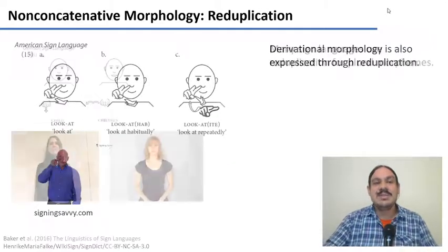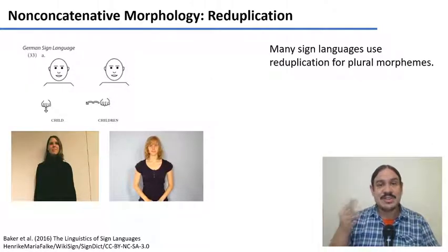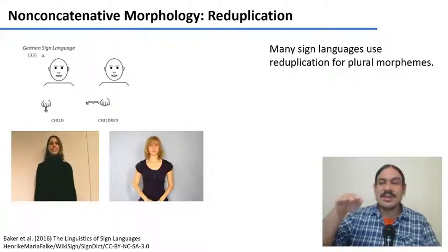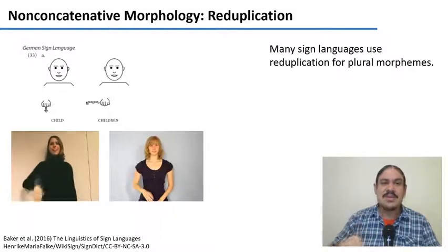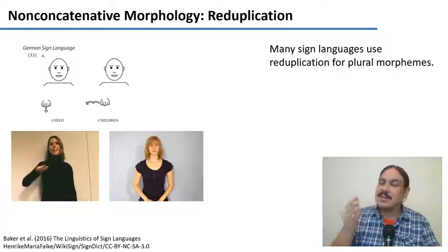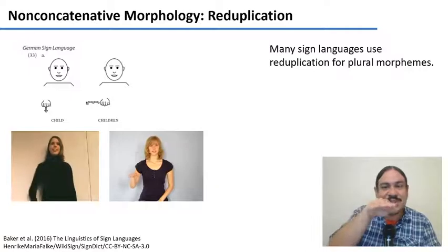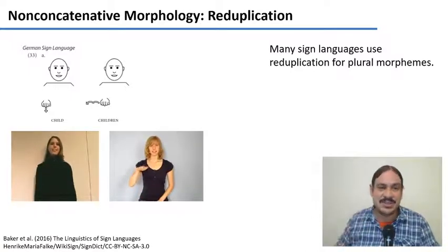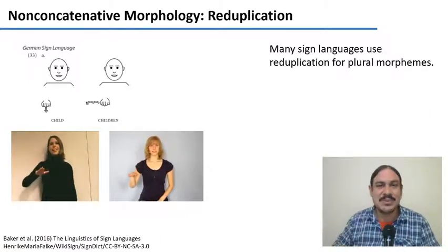Sign languages have ablaut and reduplication. This is an example of partial reduplication. The first word is the German sign language word for 'child': extended hand, downward motion. The word for 'children' has less of a drop in the hand — not as much of a drop, and then a repetition of it. So this is a kind of partial reduplication of the sign 'child', where you duplicate a little bit of it — some of the drop — and then continue onto the motion.